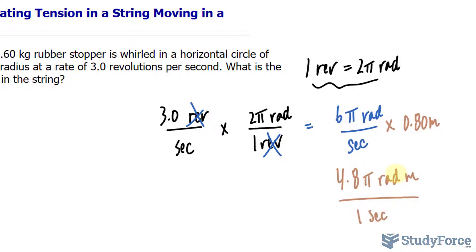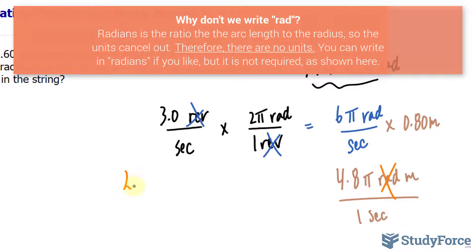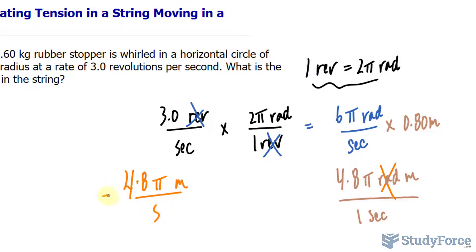Now, in these sorts of applications, radians doesn't need to be written down as a unit. So if I take away the radians unit, I have 4.8 pi meters per every second. And as you can tell, this unit meters per second is for speed or velocity. So I'll write down v for velocity.